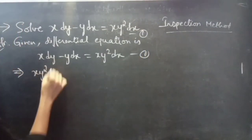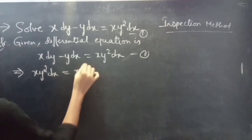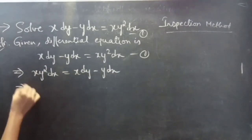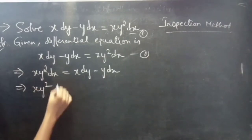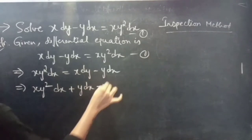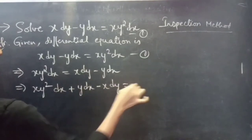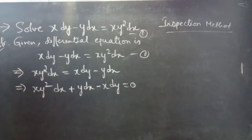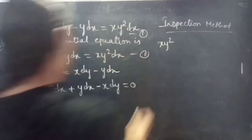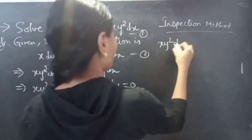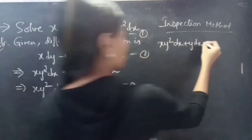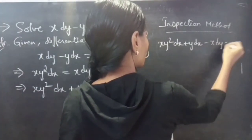x y squared dx equals to x dy minus y dx, then x y squared dx plus y dx minus x dy equals to 0. So we are having x y squared dx plus y dx minus x dy equals to 0.